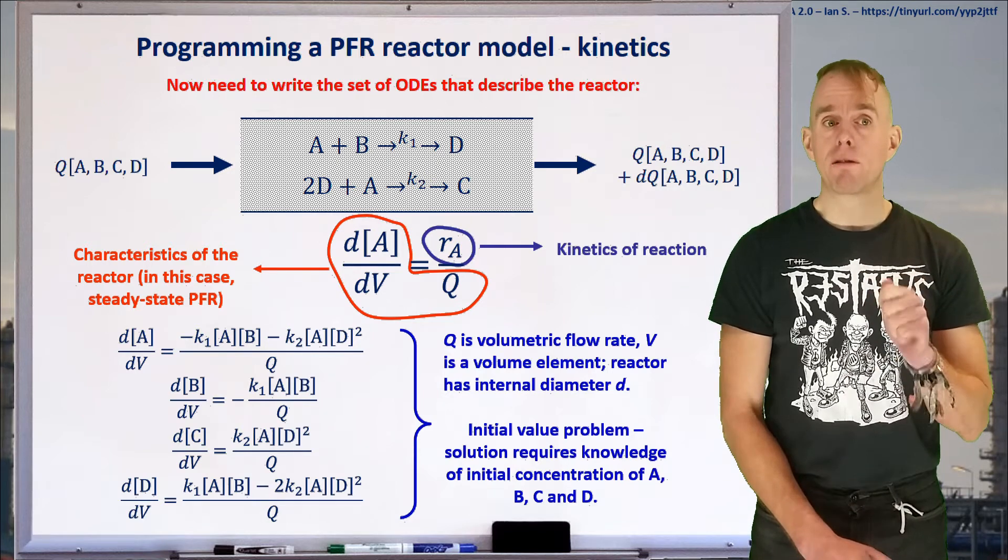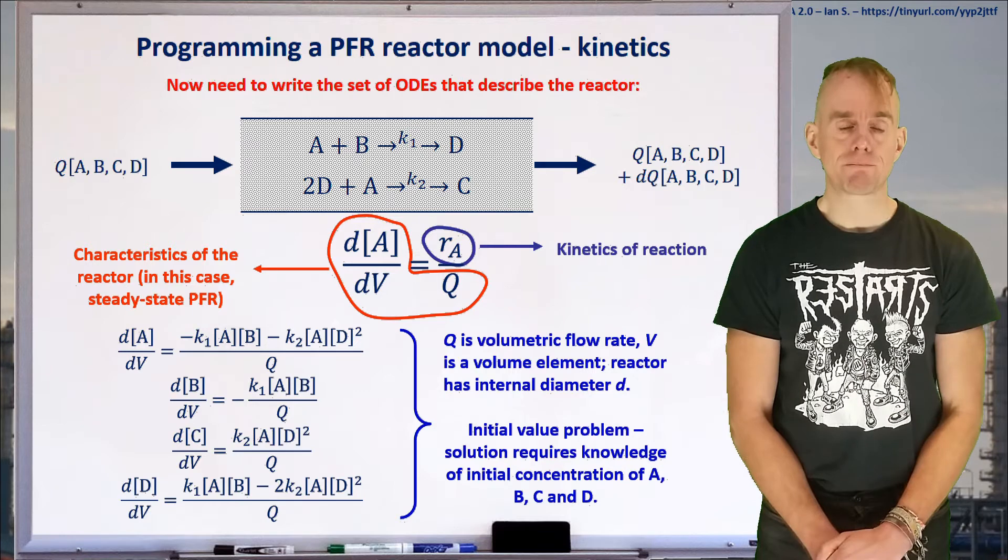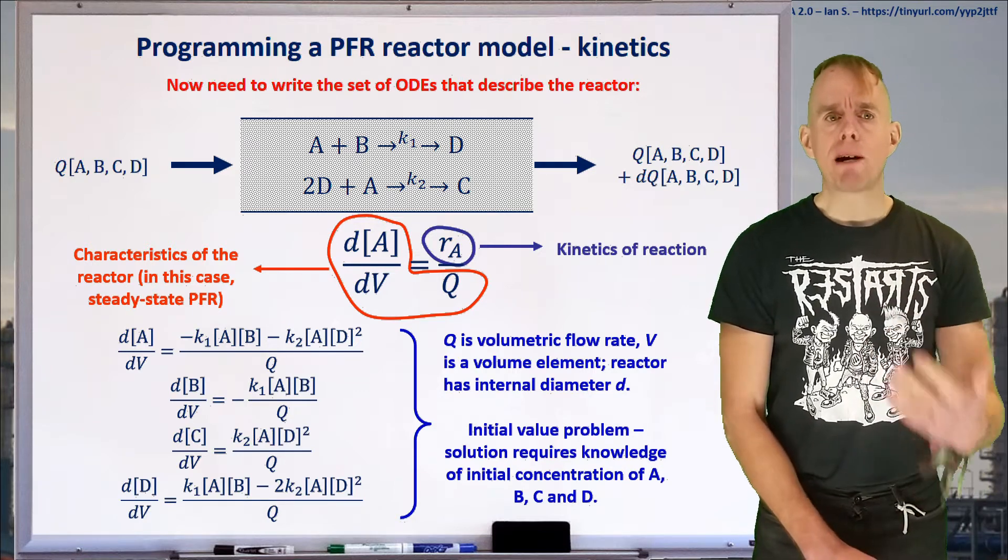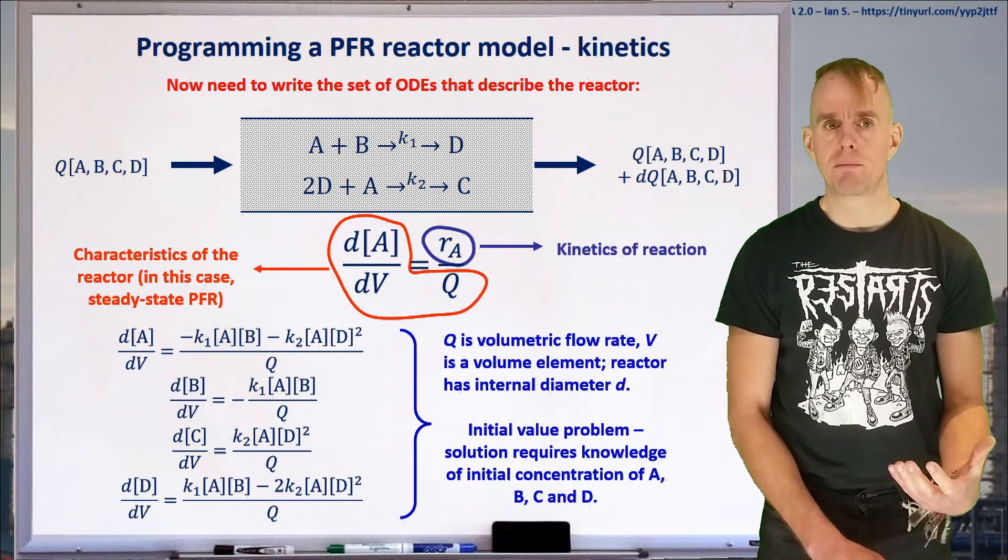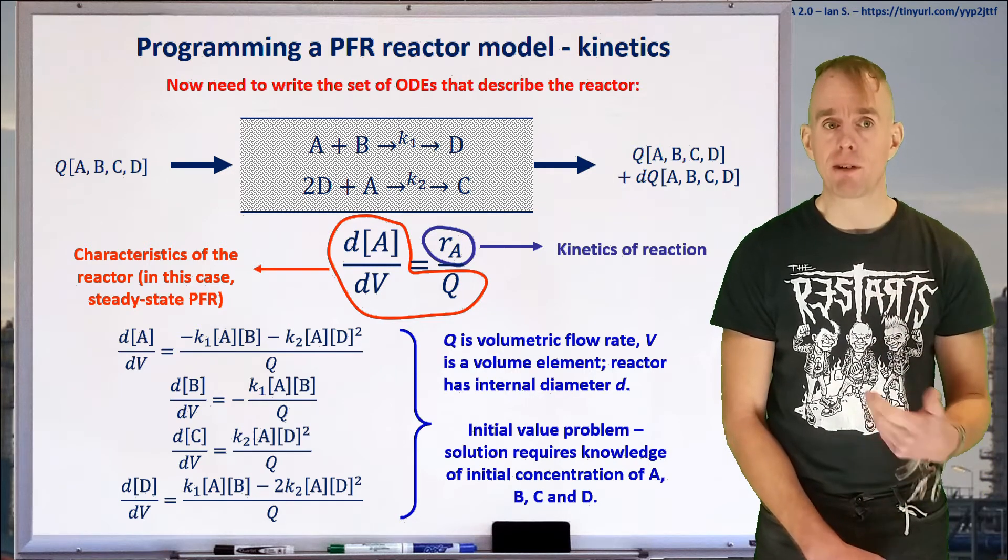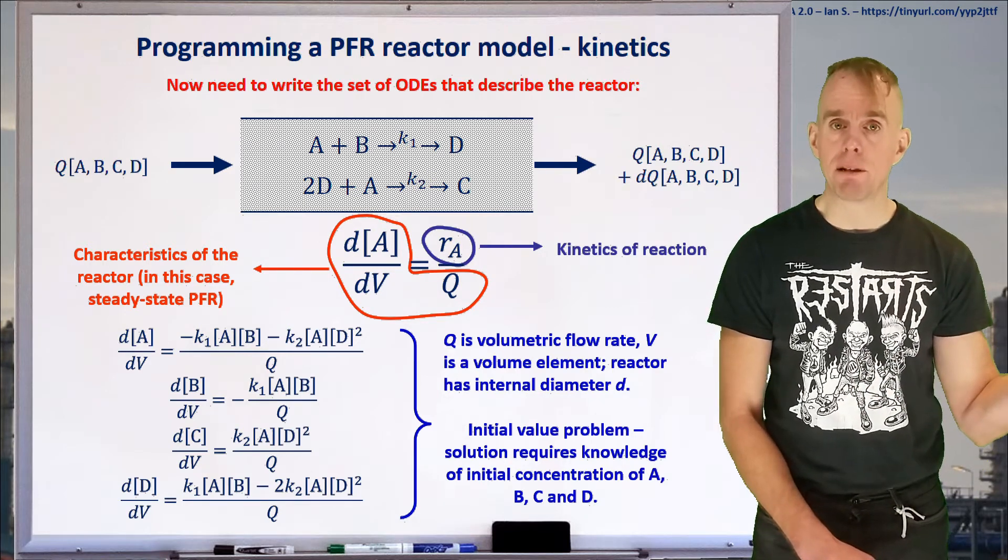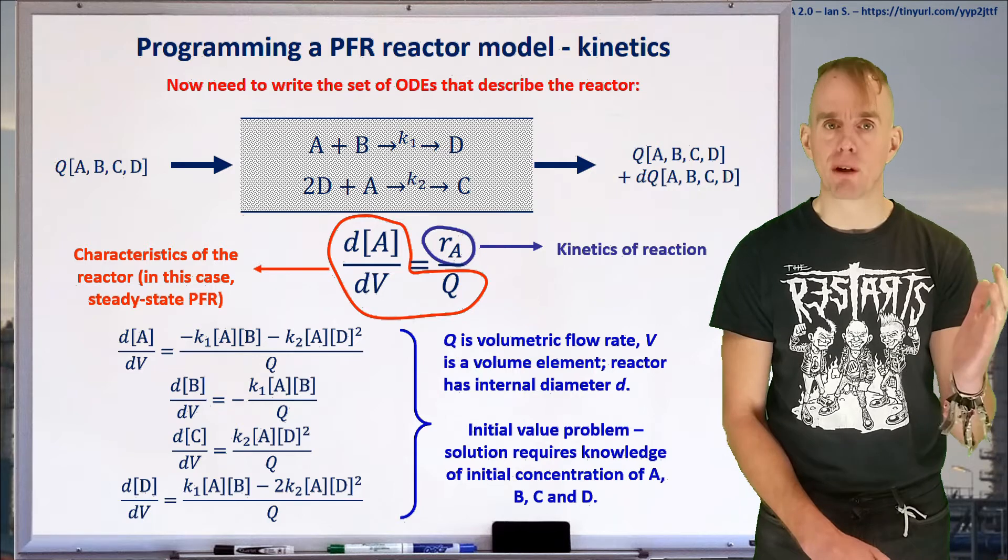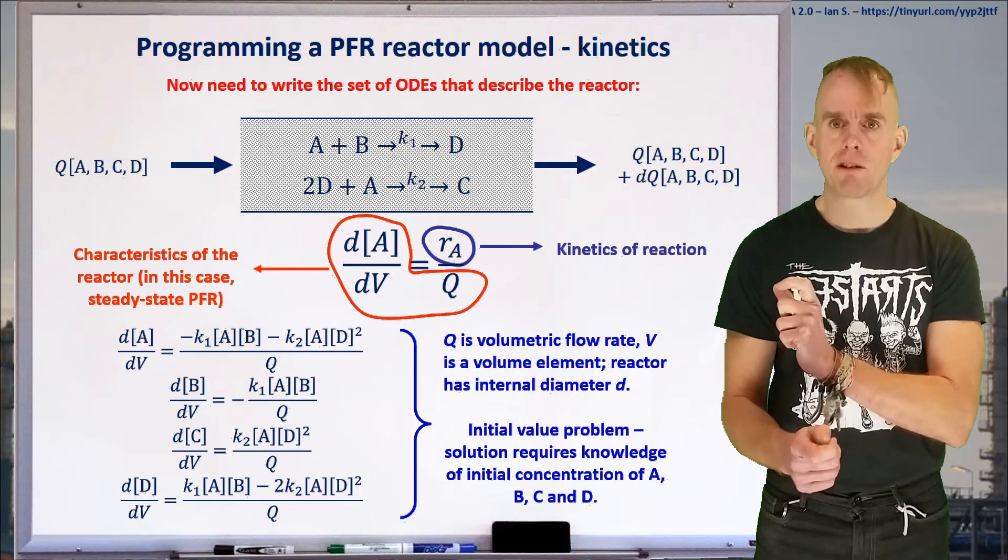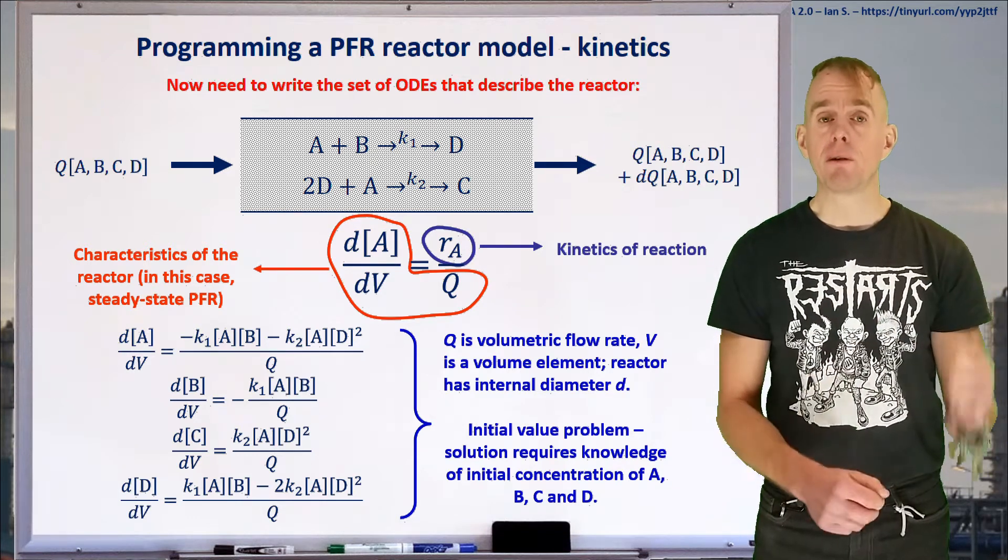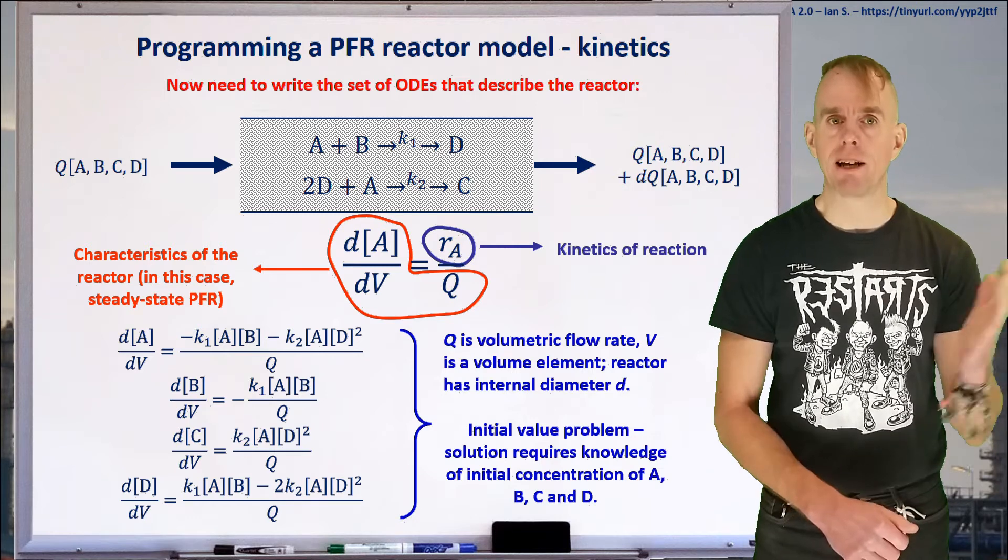If we think about solving these differential equations, this is an initial value problem. To solve them, we need to know the concentration of A, B, C and D coming into our volume element. If we imagine the plug flow reactor as a series of volume elements, we need to know the feed concentration of A, B, C and D entering that reactor.